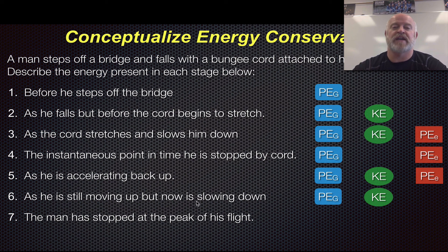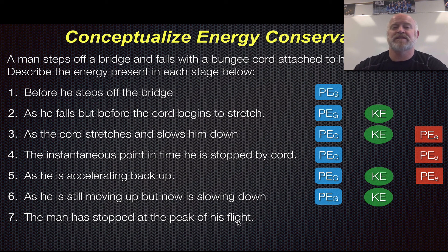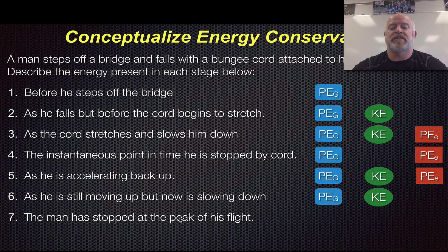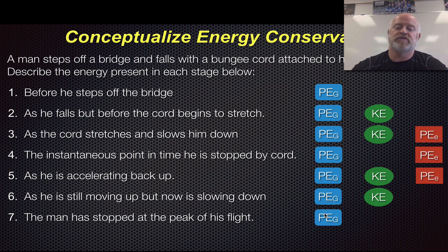Imagine he's kind of flying upwards and he's going to hit his peak — that's part seven. So part seven: he stopped at the peak of his flight. If we had 100% conservation of energy here — nothing turned into heat, no wind resistance, no friction — in theory we're going to talk about where that peak of his flight would fall. But first: what energies are available here? Hopefully you said it was gravitational potential energy only, because he's at the peak of his flight which means he's no longer moving.